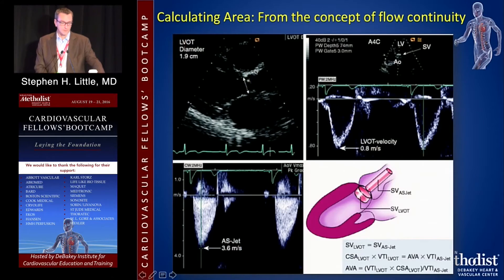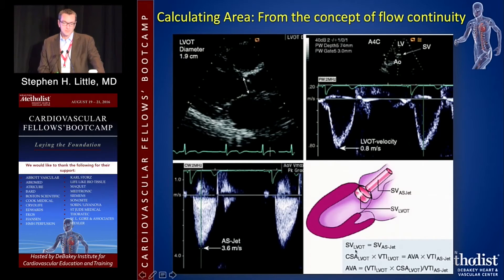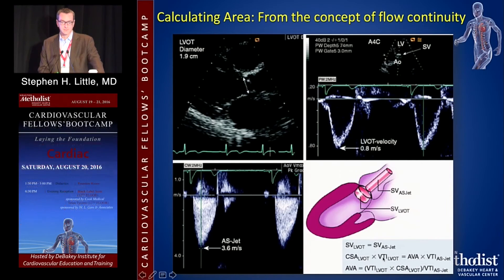For calculating valve area, we use the continuity equation: the stroke volume crossing the LVOT must equal the stroke volume crossing the aortic valve. Volume equals area times distance on each side. We know the LVOT cross-sectional area and its VTI — that's stroke volume — so we divide that by the aortic VTI from the Doppler trace, and that gives us the aortic valve area. Cross-sectional area × LVOT VTI divided by aortic VTI equals AVA.